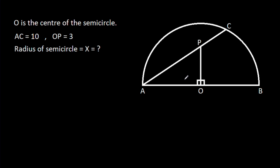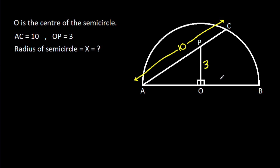In this video, we have been given that O is the center of a semicircle and PO is perpendicular on AB. AC is 10, OP is 3, and the radius of the semicircle is X. We have to find X.